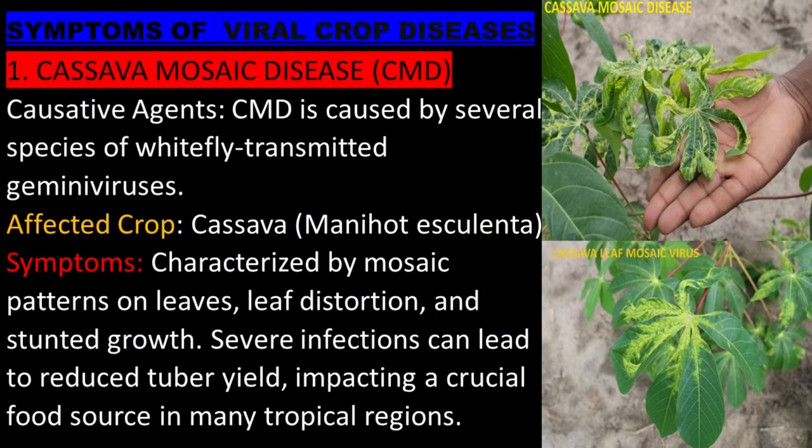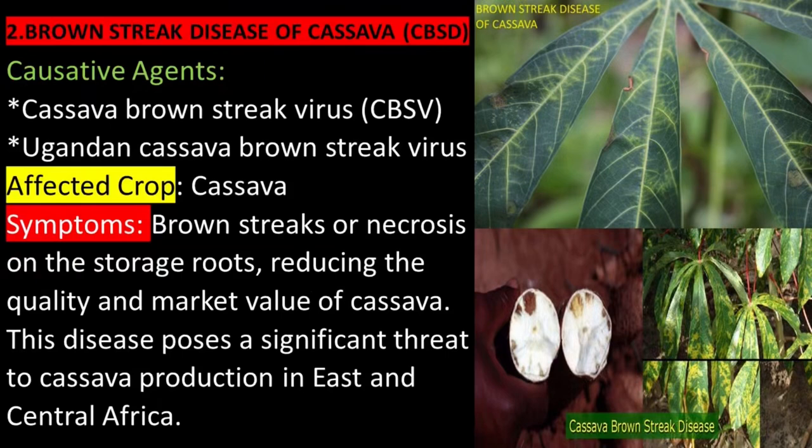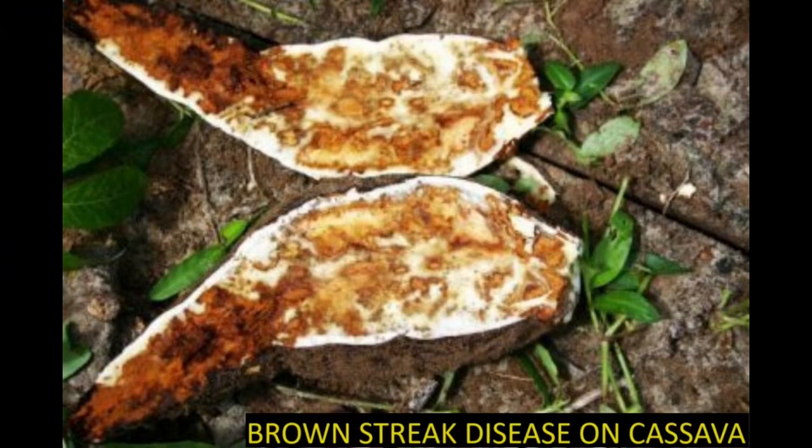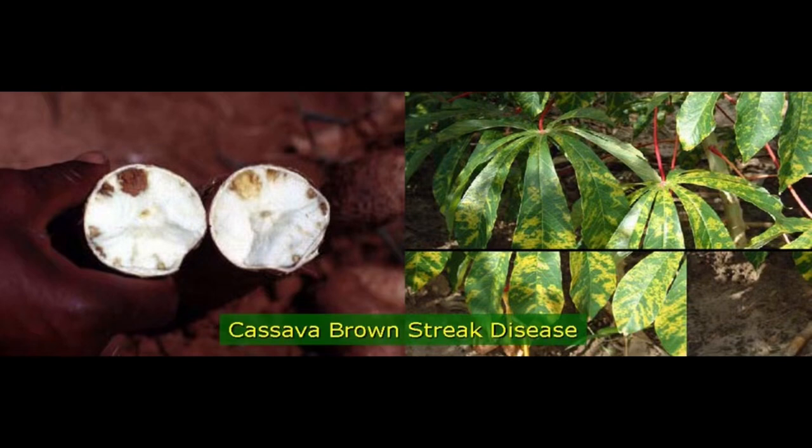Brown Streak Disease of Cassava is caused by two distinct viruses: Cassava Brown Streak Virus and Ugandan Cassava Brown Streak Virus. The affected crop is cassava. Symptoms include brown streaks or necrosis on the storage roots, reducing the quality and market value of cassava. This disease poses a significant threat to cassava production in East and Central Africa.